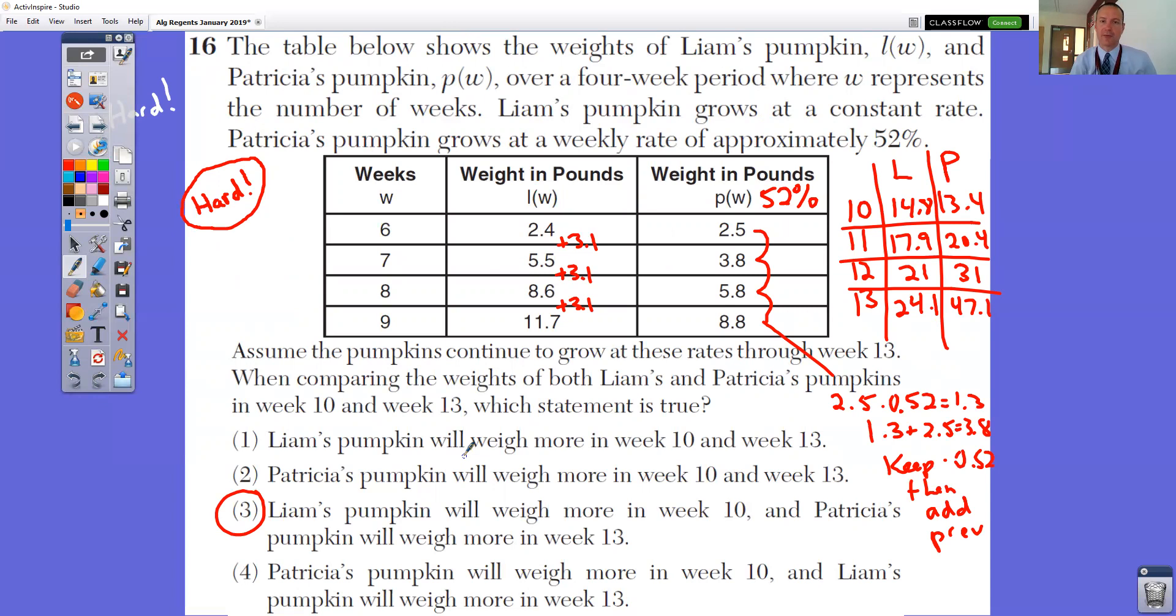Number 16 is a very hard question. The table below shows the weight of Liam's pumpkin, L of W, and Patricia's pumpkin, P of W, over a 4-week period. Notice that it says Liam's pumpkin grows at a constant rate. So it gets bigger by the same amount each time. Patricia's weight grows at a weekly rate at approximately 52%. So notice that we have L of W, this is Liam, and this is Patricia. So Liam's pumpkin, notice that it goes up by 3.1 pounds each week. This one goes up by 52%. So you would have to take that number and figure out what 52% of 2.5 is and add it to the original amount. So 2.5 times 52% is 1.3. Add that to the 2.5 to get 3.8.